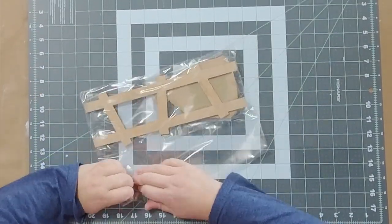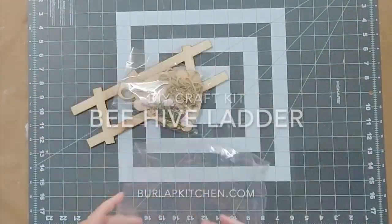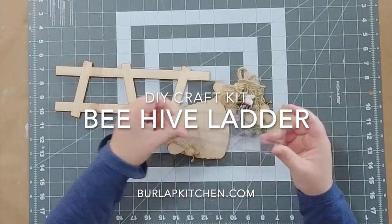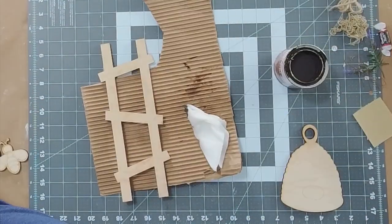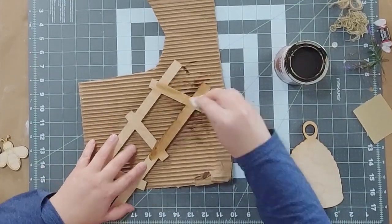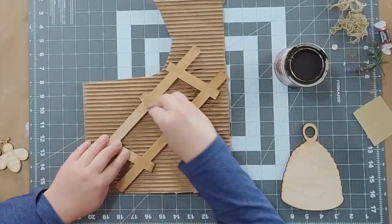Let's walk through this beehive ladder kit. It is so adorable, you guys are going to love it. The first thing we're going to do is take everything out of the pack. We include all the wood pieces and embellishments, and then a little snack of a Tootsie Roll for you to munch on while you're crafting.